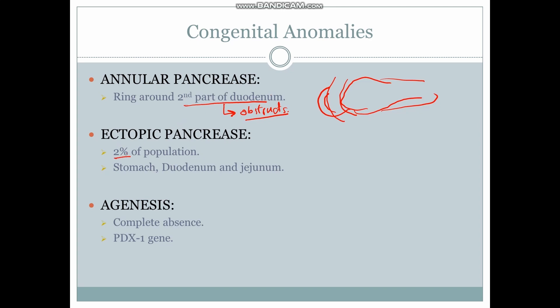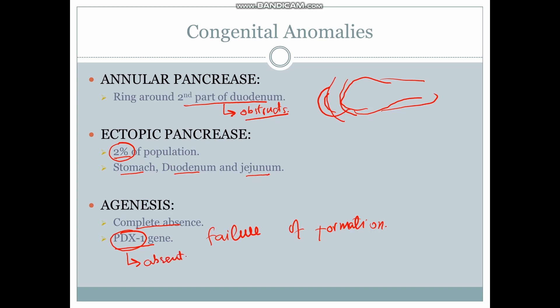Ectopic pancreas occurs in almost two percent of the population, and common sites include the stomach and the duodenum. Ectopic pancreatic tissue has also been found in the jejunum. Agenesis means complete absence, indicating a failure of formation. The PDX1 gene is involved in the agenesis of the pancreas — it is important for pancreatic development, and when this gene is either absent or mutated, agenesis of the pancreas results.